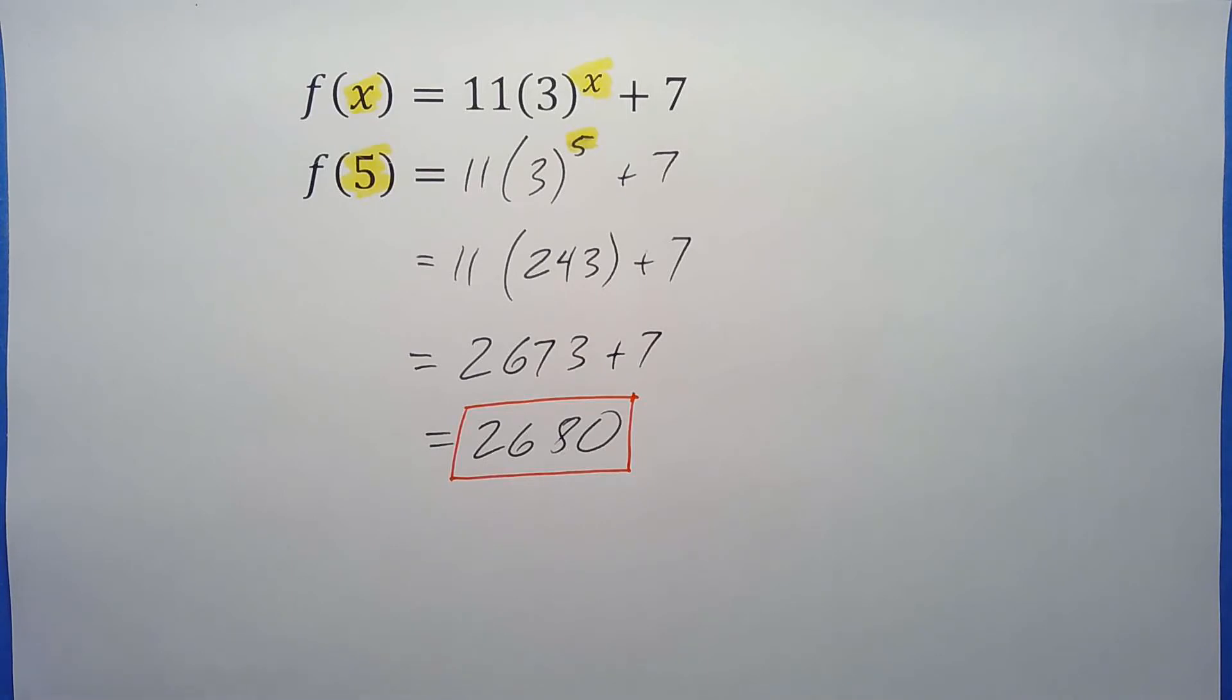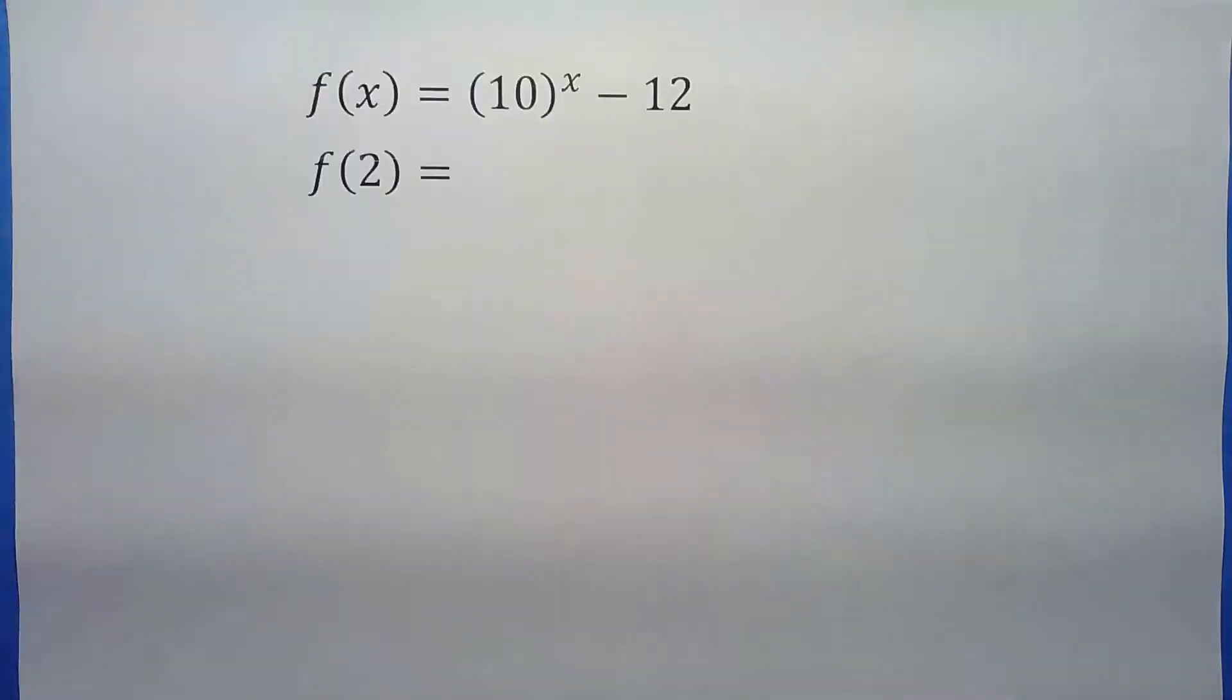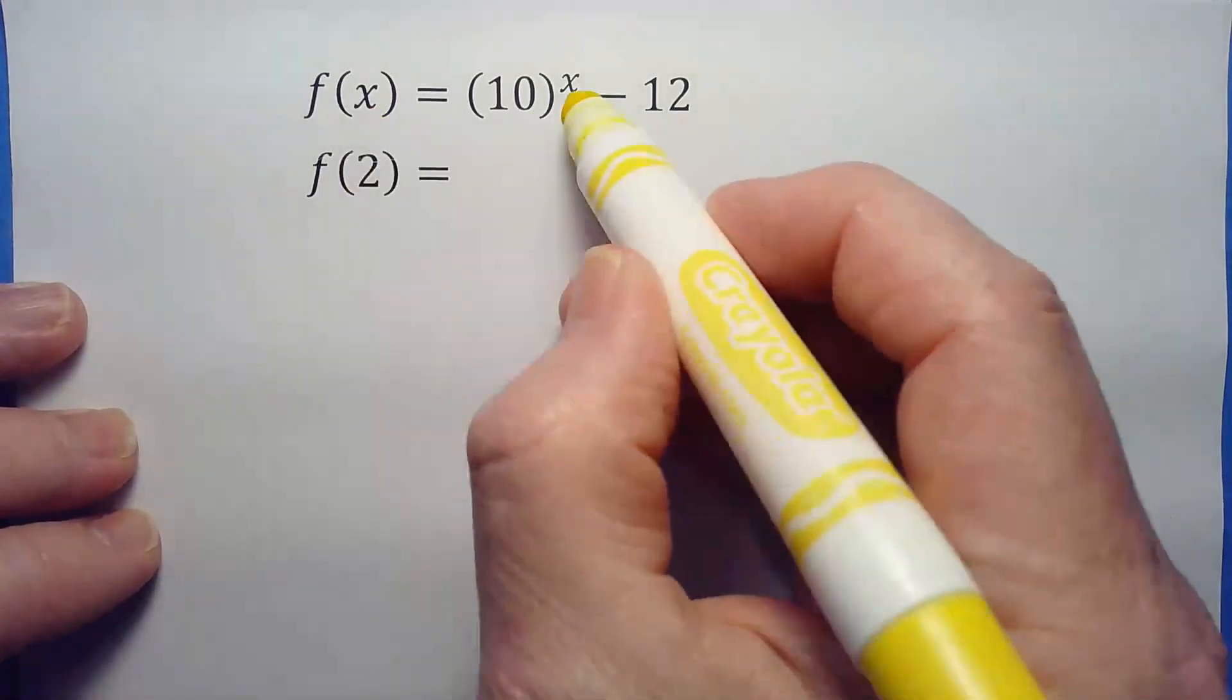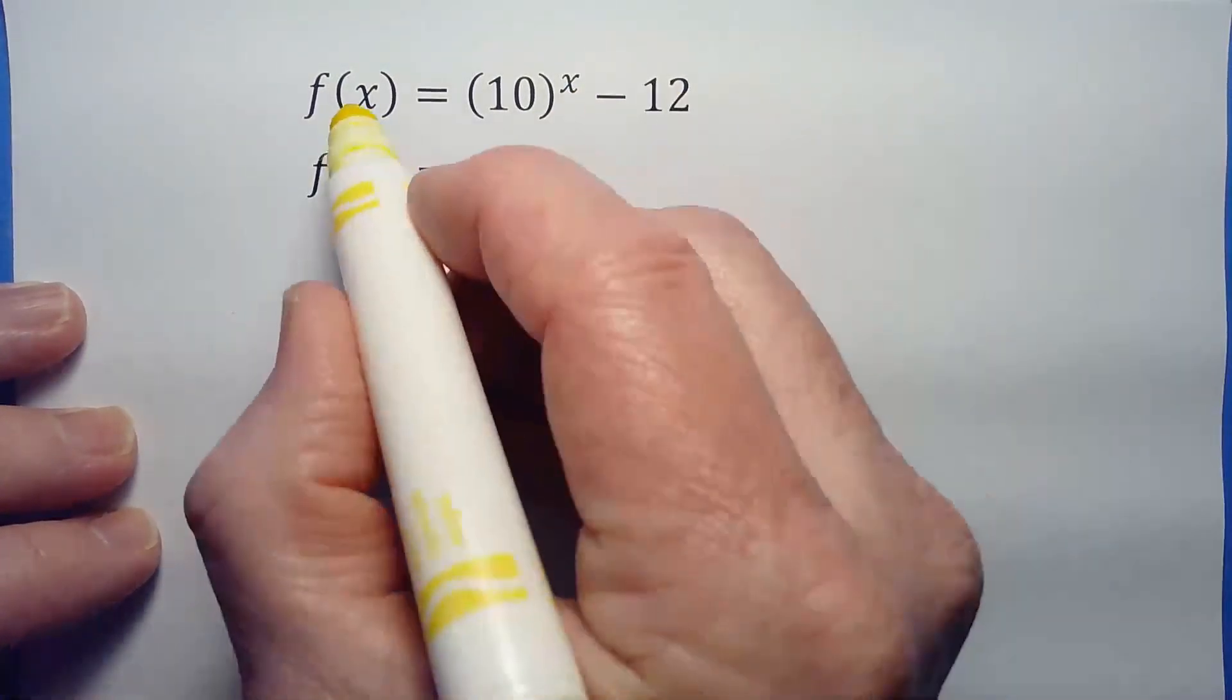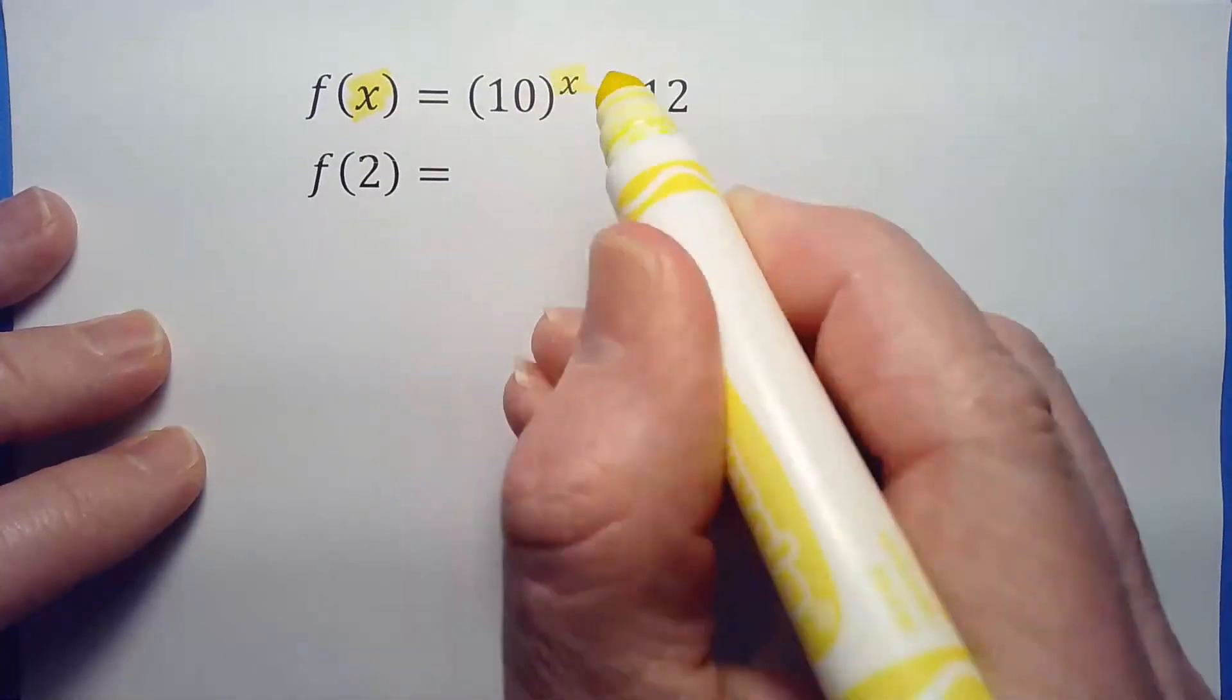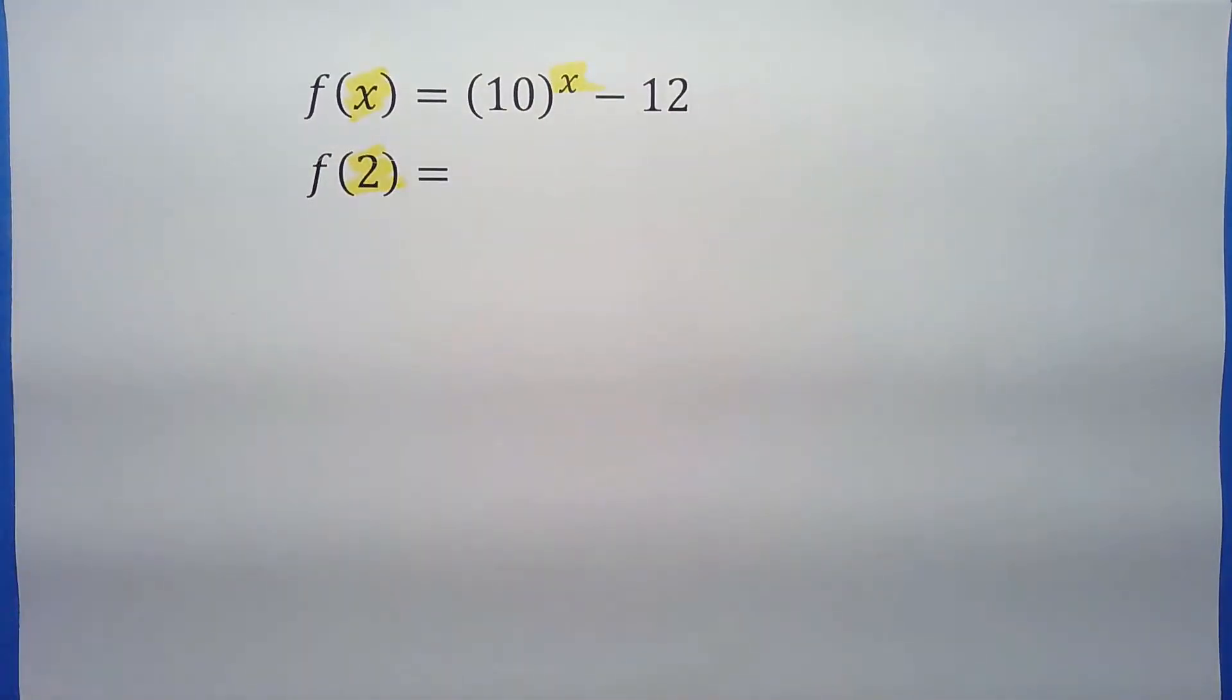We're on a roll. This is going great. All right, slightly more complicated because now we've got a minus. Not too bad, but just be careful. Here's what we're going to replace: instead of that x, we've got a 2.